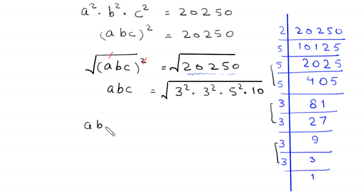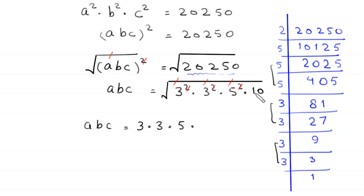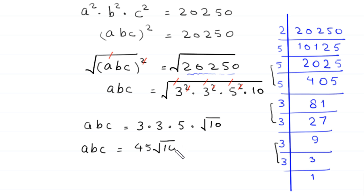A times B times C is equal to 3 times 3 times 5 times square root of 10, which is 9 times 5 times root 10, giving us 45 times root of 10. So we have the value of A·B·C equal to 45 times root 10.